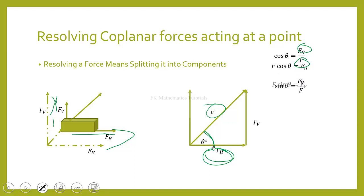Similarly, the sine of the angle gives us the y-component. So the horizontal component is given by the magnitude of the force times cosine of the angle (F cos θ), and the vertical component is given by the magnitude of the force times sine of the angle (F sin θ).